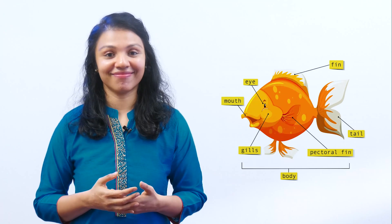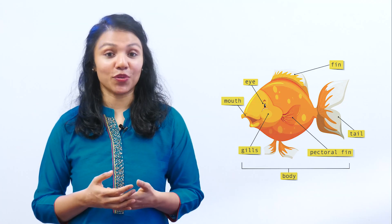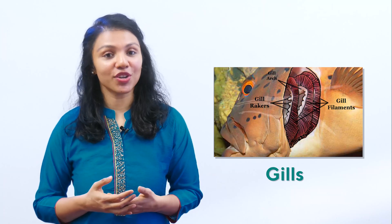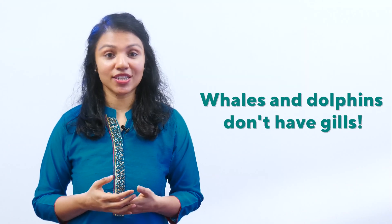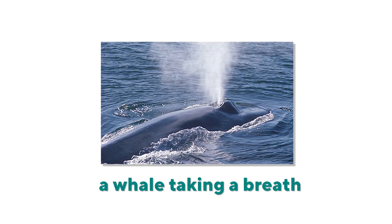The second category based on habitat is aquatic animals — those that live in water. Fish is the obvious example, with adaptations like gills for breathing. Interestingly, whales and dolphins live in water but don't have gills — they have lungs, just like us. So they don't breathe underwater; every once in a while they come up to the surface to take a large breath and then go back into the water.